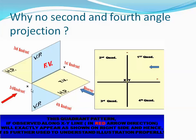Similarly, if the observer sees from the left side — you can see the arrow from that direction — the projections are placed on the right side. For the same reason, the left side view is represented on the right side.